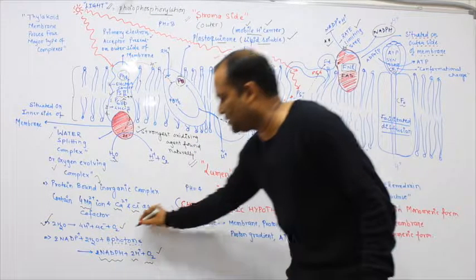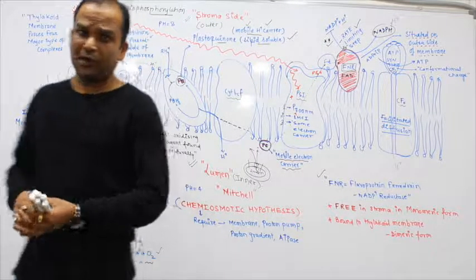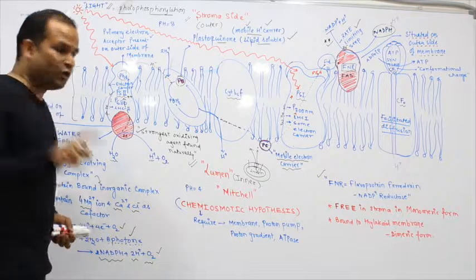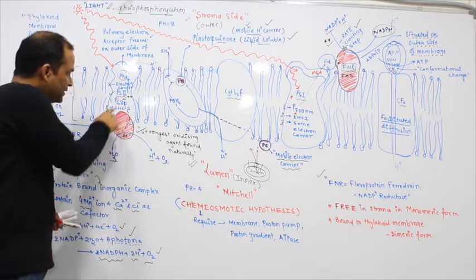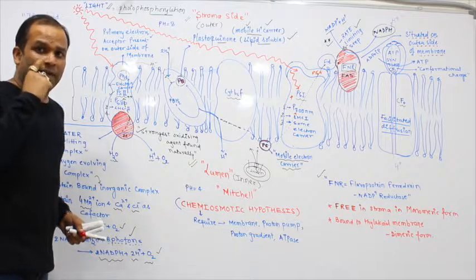To produce 1 molecule of oxygen we require 8 photons. During this process, photolysis of water occurs by the water splitting complex or oxygen-evolving complex.